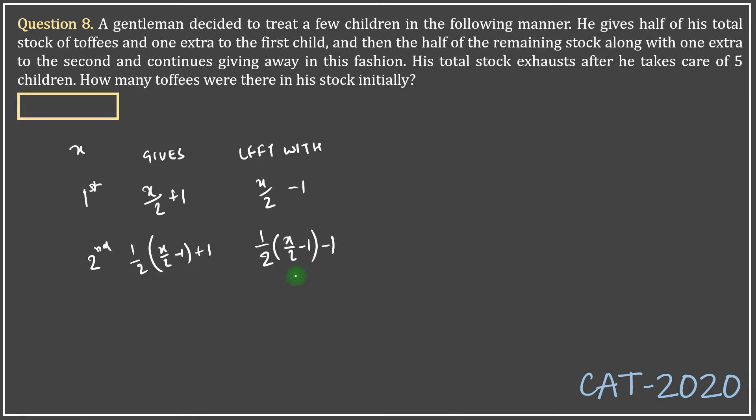He continues giving away in this fashion. His total stock exhausts after he takes care of five children. So he goes on up to the fifth child. Every time that you have x, you will have it reduced by one. This process will go on five times.